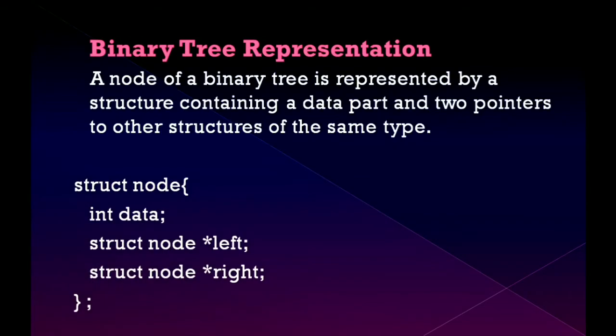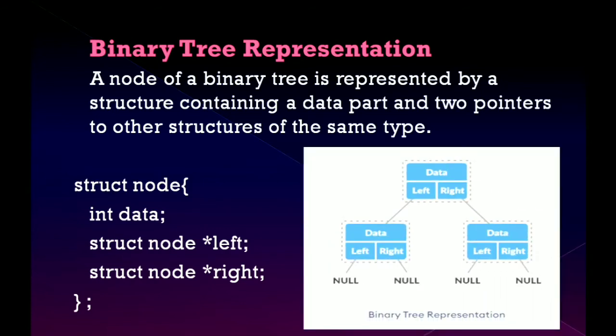Let us discuss the binary tree representation. A node of a binary tree is represented by a structure containing a data part and two pointers to other structures of the same type. If you look at the bottom left corner of your screen, this is how we are going to create a node for binary tree in C language.